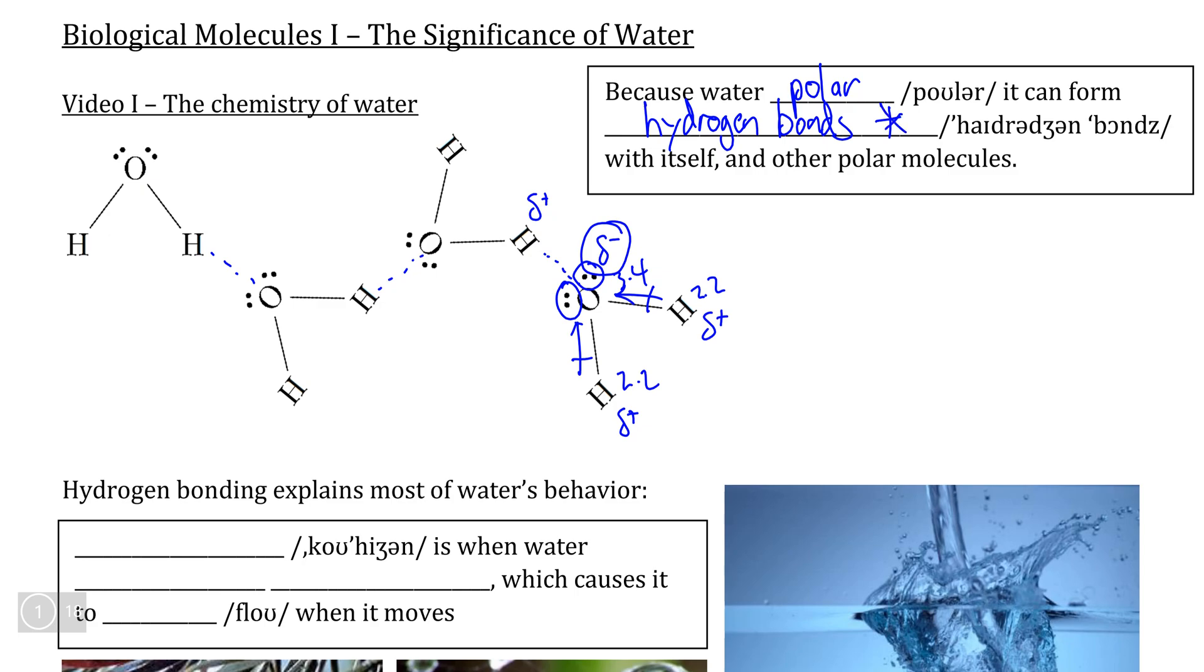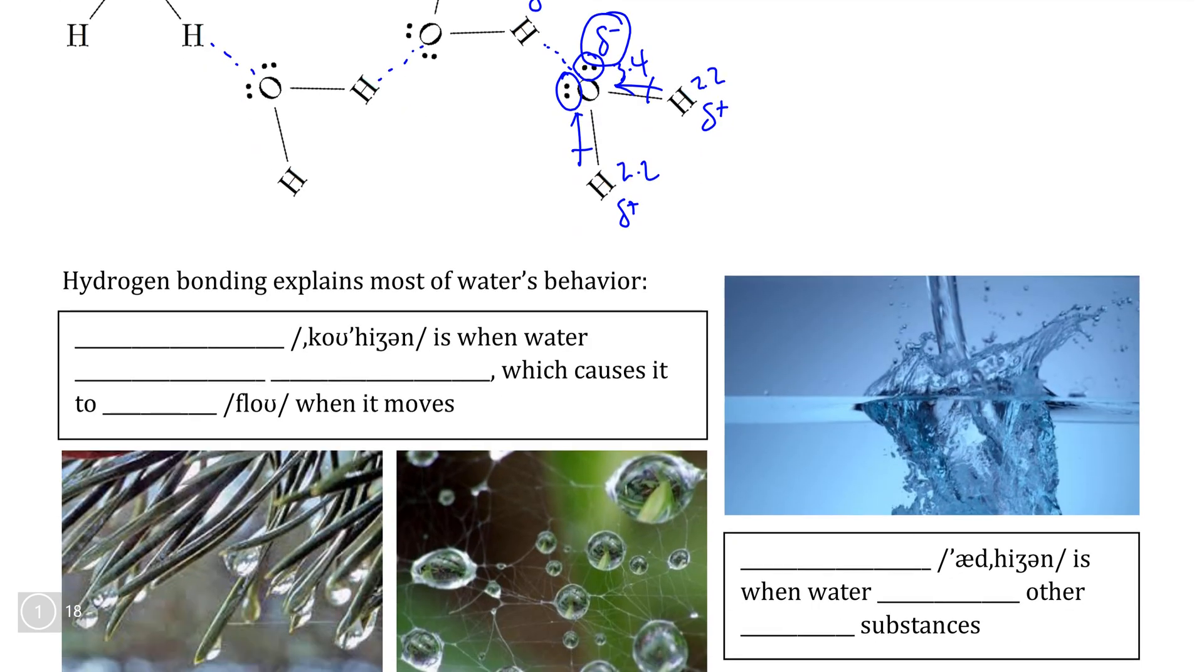Hydrogen bonding is very important because it is this phenomenon that explains a large number of water's chemistry and behavior when interacting with other substances, the first of which is a phenomenon that we call cohesion.